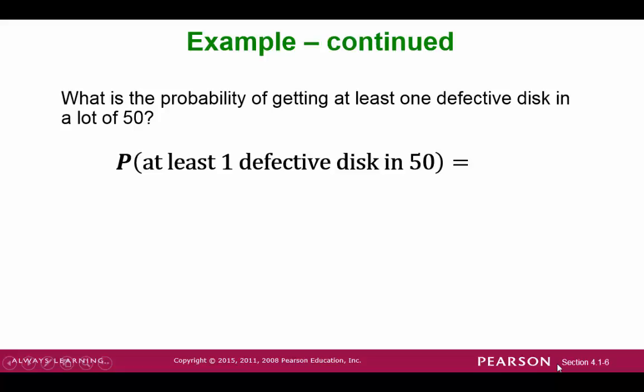So let's write out the probability notation. If we were to do this directly, we would need to find probability of getting one defective, or two defective, or three defective, and so on. This can get quite lengthy with 50 of them. So instead, we'll take advantage of the complement rule.